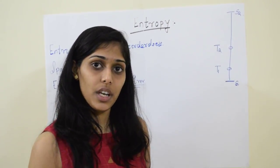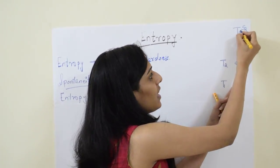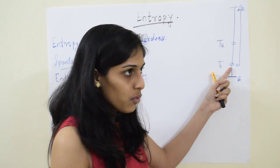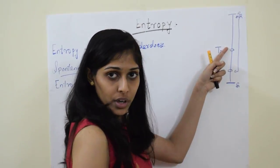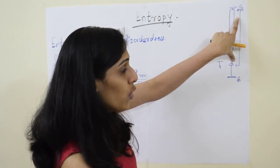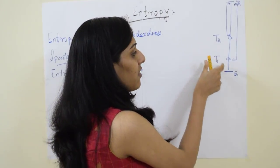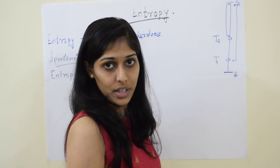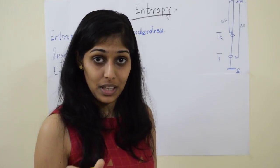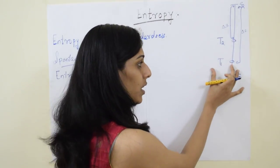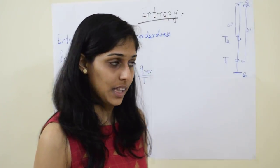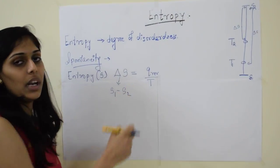If a system is already at a high temperature, the change it can make is smaller. So the change in entropy is inversely proportional to temperature — lower the temperature, higher is the delta S, and higher the temperature, lower is the delta S. That is why the equation is delta S equals Q reversible divided by T.